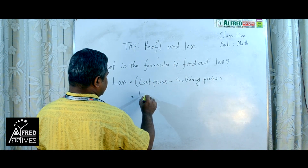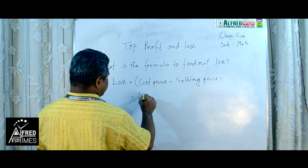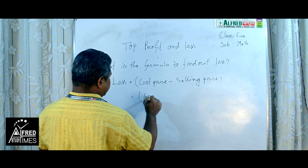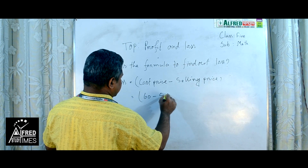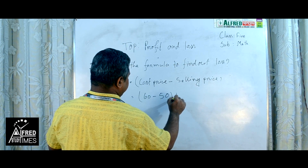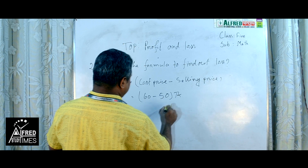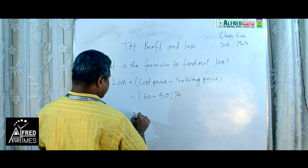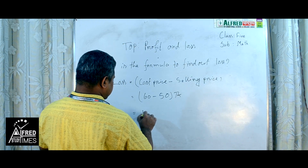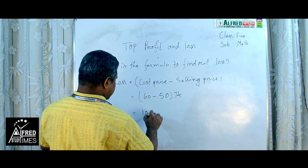For example, if the cost price is 60 Taka and the selling price is 50 Taka, so what is the Loss? 10 Taka.